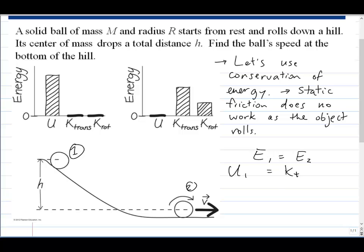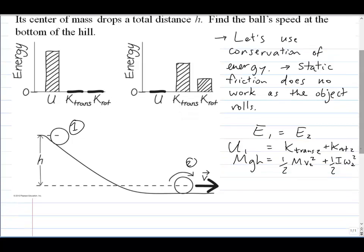So we'll call it e1 equals e2, where 1 is the beginning, 2 is the final. So u1 equals the K translational 2 plus K rotational 2. That's going to be mgh will be initial equals 1 half mv2 squared plus 1 half I omega 2 squared.